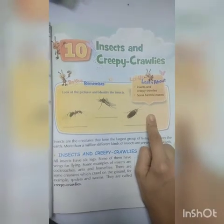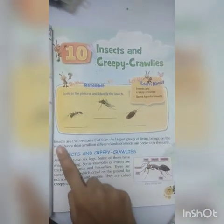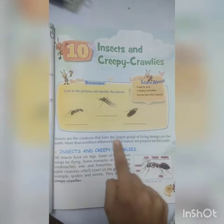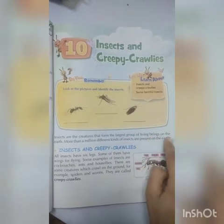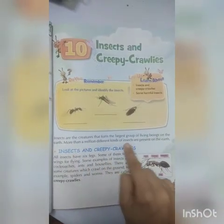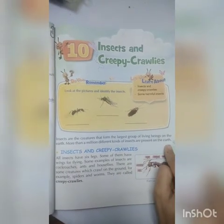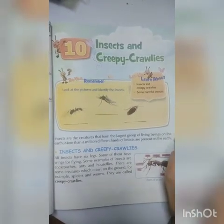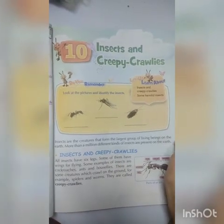This will be your homework. Insects are the creatures that form the largest group of living beings on earth. More than a million different kinds of insects are present on the earth.